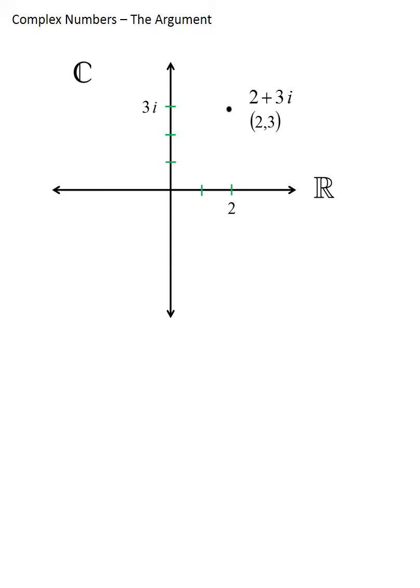This lesson is about finding the argument of a complex number. Suppose we have the complex number 2+3i, which we can think of as a point, and we want to find its argument — meaning the angle formed by the x-axis. To find this angle, we create a triangle, call the angle theta, and set up a tangent equation in order to solve for theta.